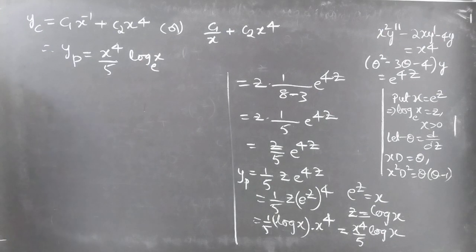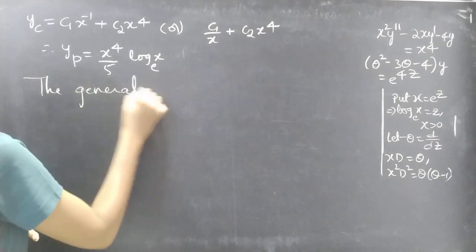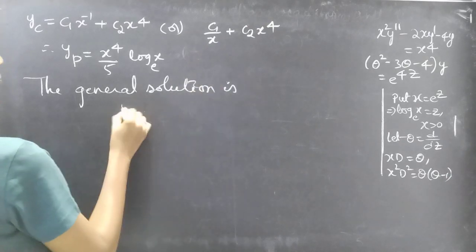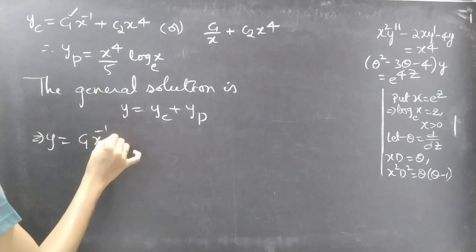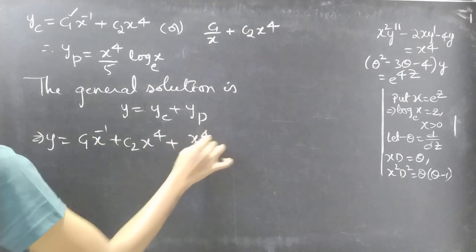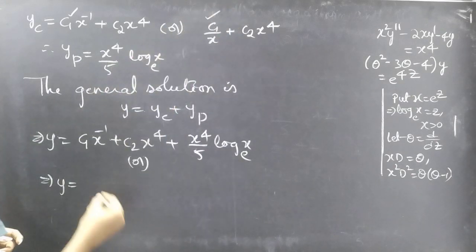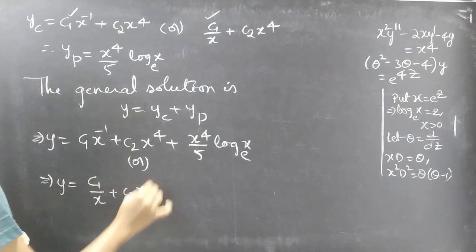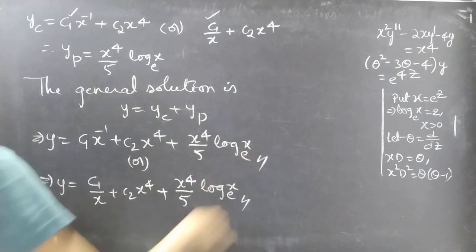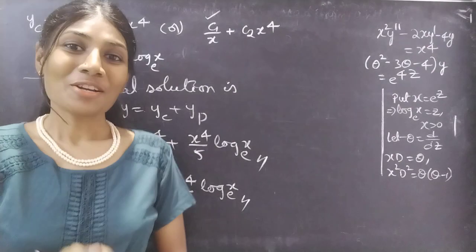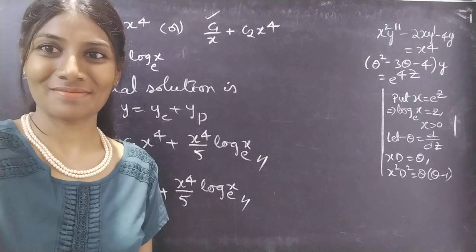Now we have both yc and yp, so we can write the general solution. y equals yc plus yp gives y equals c1/x plus c2·x⁴ plus x⁴·log(x)/5. This completes the problem. We have seen a problem from higher-order linear differential equations with variable coefficients. Hope you understood. See you in the next video. Bye-bye.